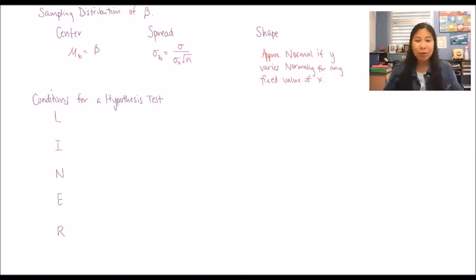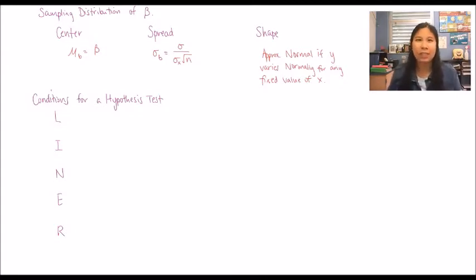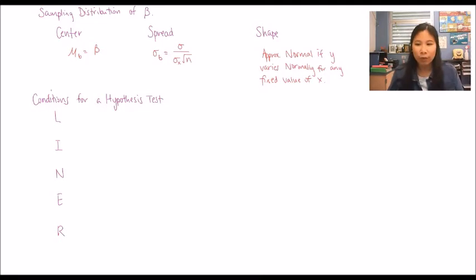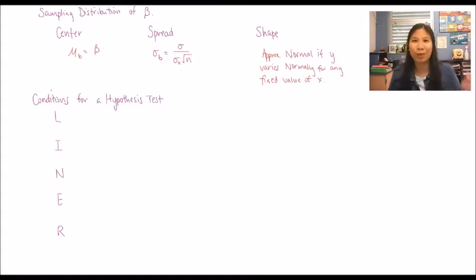To perform a hypothesis test on the population slope, the assumptions and conditions are very different from before. Instead of just random, independent, and normality, linear regression has more conditions because we have two variables. These conditions are organized into the acronym LINER, which helps you remember all the conditions for this specific test.